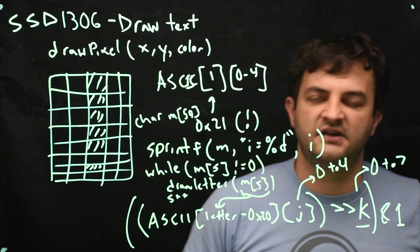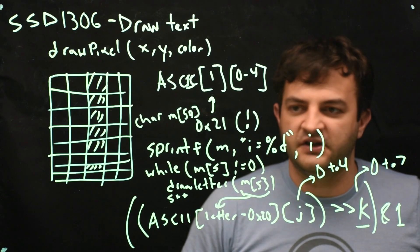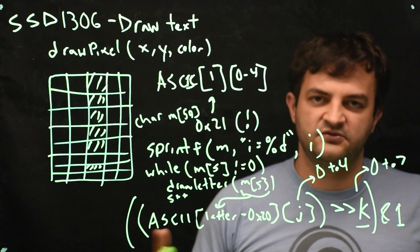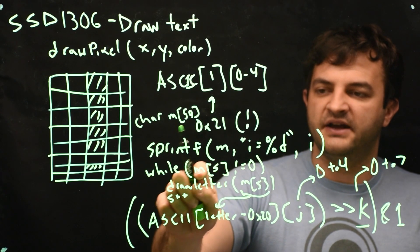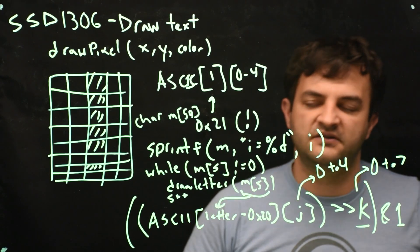That's called the null character. That's how the string knows that it's been terminated. So if we keep looping through every letter in m, eventually we'll hit a 0, and that's when we know to stop.